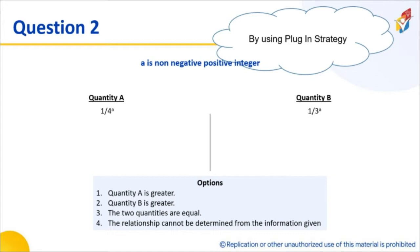Let's see how we can use it in some other question. A is a non-negative integer - I would not use the word positive, it should have been a is a non-negative integer. 1 by 4 to the power a and 1 by 3 to the power a, which of them is bigger?